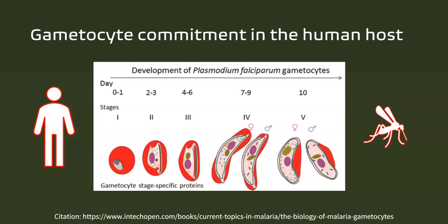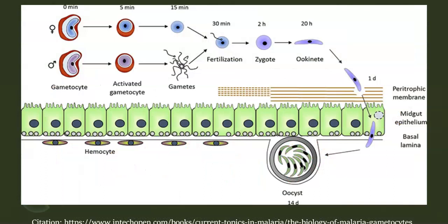What happens in the human host is very interesting — there is a process known as gametocyte commitment, which leads to the male and female forms of these parasites, termed gametocytes. Once these gametocytes enter the mosquito, zygote formation and subsequent processes occur within the mosquito. The mid-gut epithelial cells are involved, and the oocyst forms in the basal lamina of the epithelium, then enters via the salivary glands back into a new host. The process is very complex; in fact, drugs have been developed to target the metabolic processes in these oocysts.